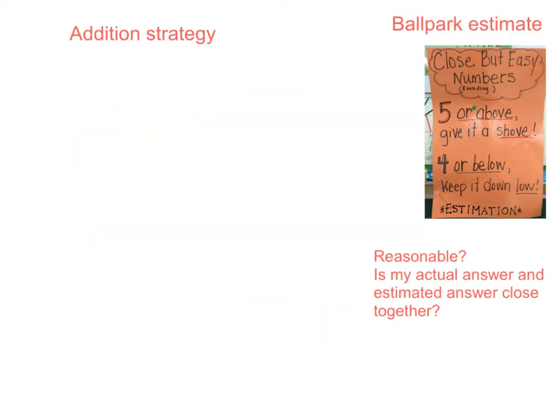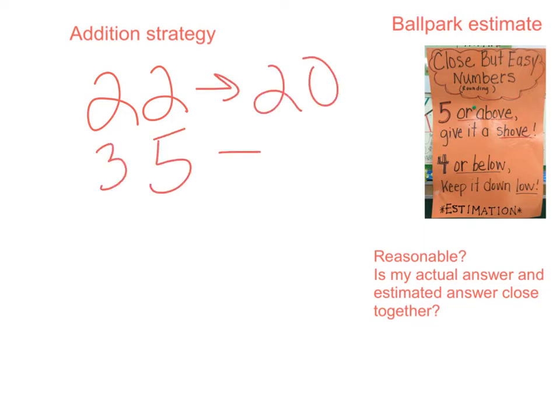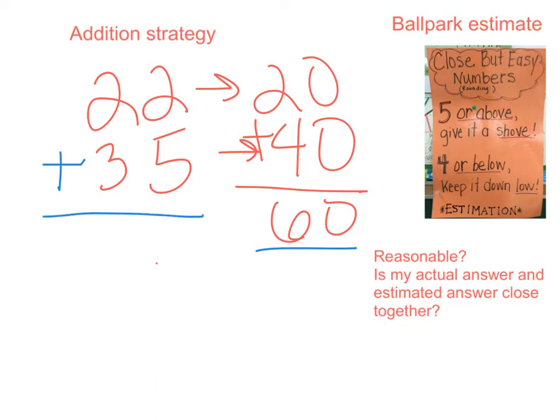Let's now combine everything together with our addition strategies and our ballpark estimates. We already know from our last slide that twenty-two rounds to twenty, thirty-five rounds to forty, and twenty plus forty equals sixty. So right now, sixty is our estimate. But now, let's add to find our actual answer. Twenty-two plus thirty-five. Use whatever strategy you'd like best to solve. Two plus five equals seven. Two plus three equals five.